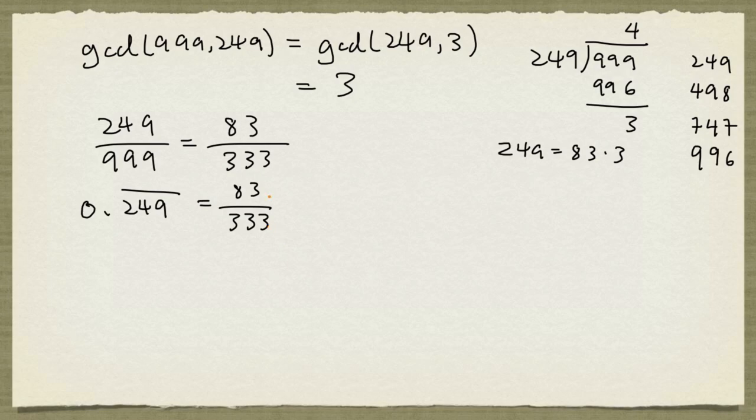But what if the number is not in this form, 0.something repeated? So let's look at a concrete example.